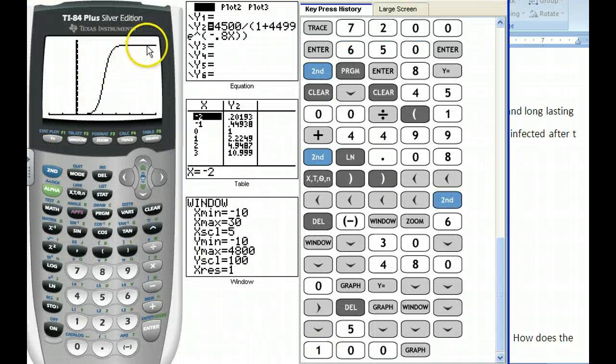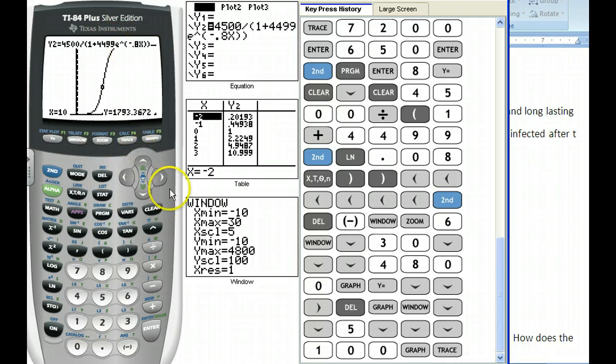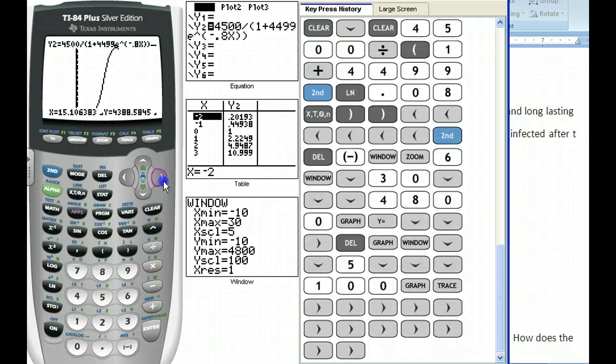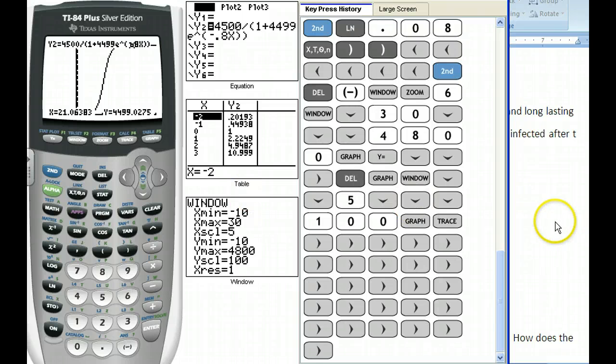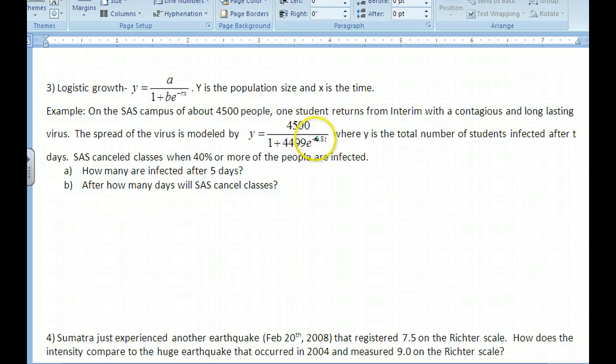SES cancels classes when 40% or more of the people are infected. How many are infected after five days? So all you would do is plug in five there. And then how many days will SES cancel classes? So we need to get over the 40% mark. So those are the two questions. So go ahead and graph this and see if you can get an appropriate window for this, knowing that there's 4,500 people on campus. Now, here's my graph. And if you look at this, this is the typical logistics curve. And so it's going to increase very rapidly, and then it's going to taper off. In fact, the horizontal asymptote for this would be Y equal to whatever this value is up here. You could trace it and get an idea. For this curve, it looks like I'm going to be approaching 4,500. Why does that make sense? Well, that makes sense because as T goes to infinity, this exponential right here, E to the negative 0.8 T, is going to go to zero.